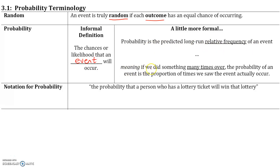Meaning, if we did something many times over, the probability of an event is a proportion of times we saw the event actually occur. For example, you could flip a coin five times and all five times the coin could land on heads. But if we flip the coin a thousand times, chances are that half the time the coin will land on heads, and half the time the coin will land on tails.